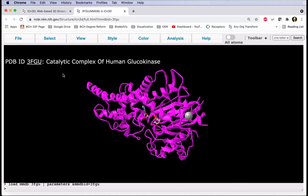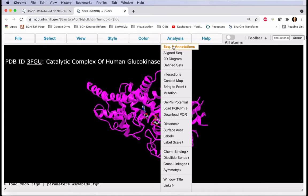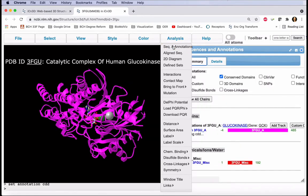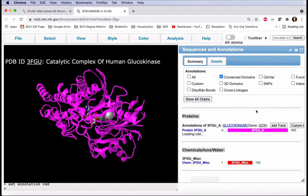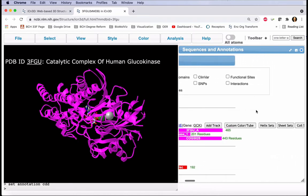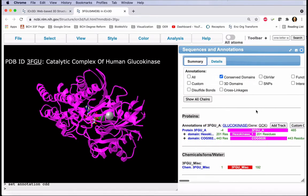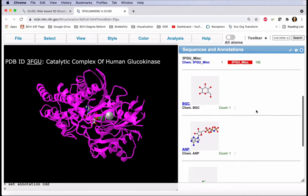To identify our ligands, we can use the analysis menu, sequence and annotations. Clicking here gives us this pop-up window. Note that you may need to scroll left and right, depending on your screen resolution, and up and down.